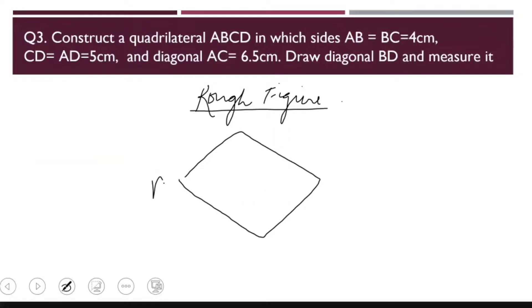So I suppose that we have a quadrilateral ABCD. AB is given to us 4 cm, BC is also 4 cm, CD is 5 cm and AD is also 5 cm. We have AC diagonal given to us as 6.5 cm.